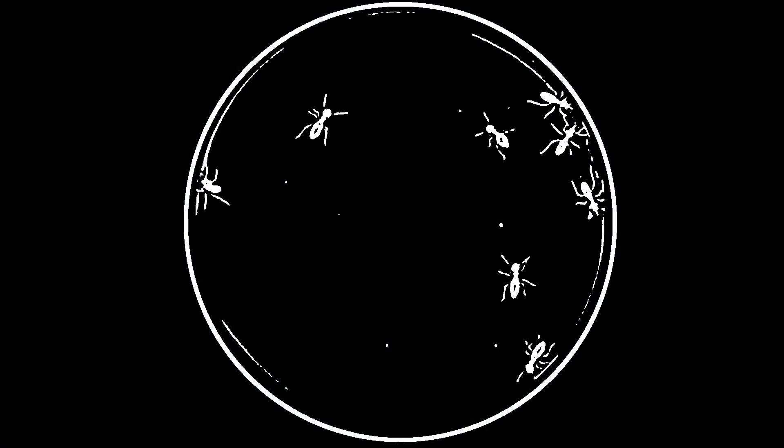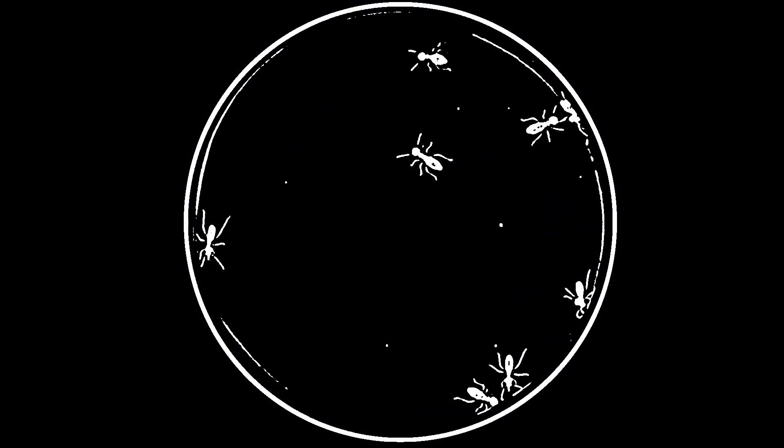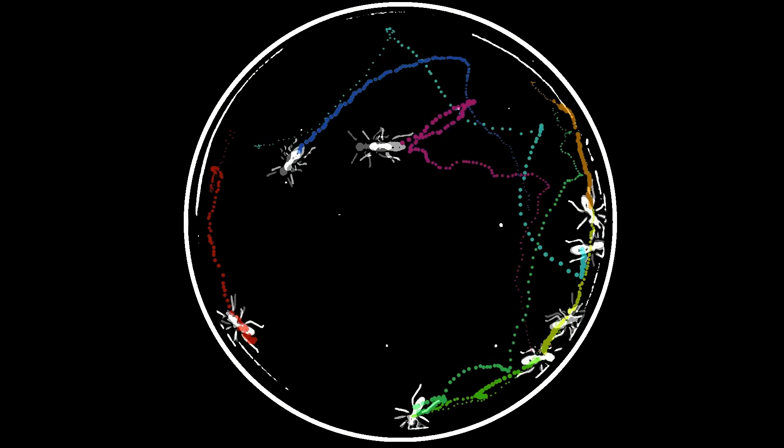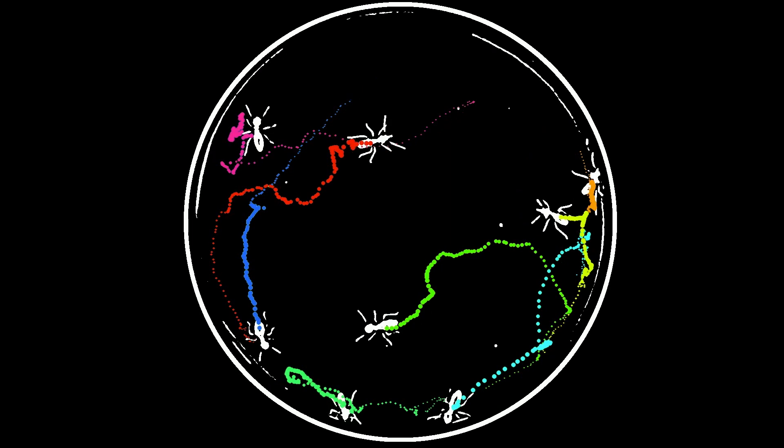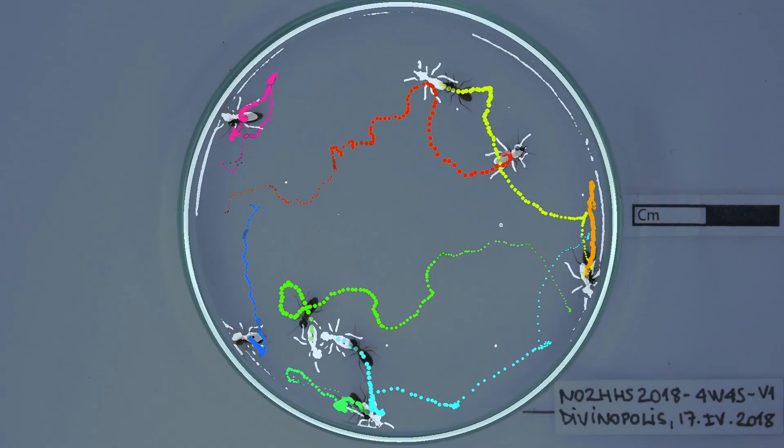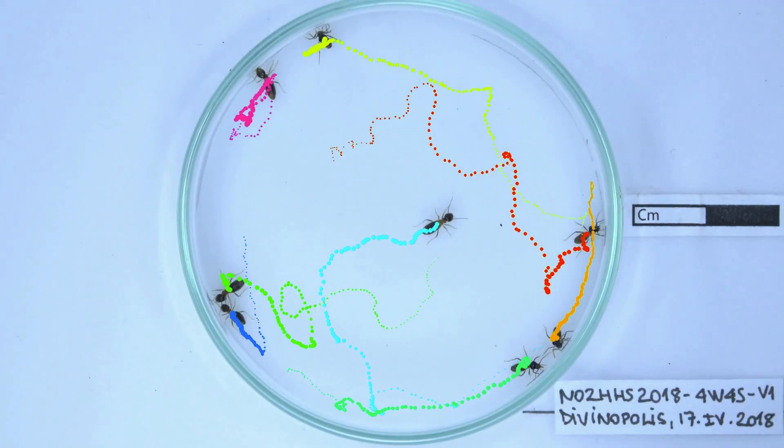The software works basically in a two-step process, the first step being detection and the second step being the tracking itself. The software uses a contrast difference between a background and a foreground to detect objects.